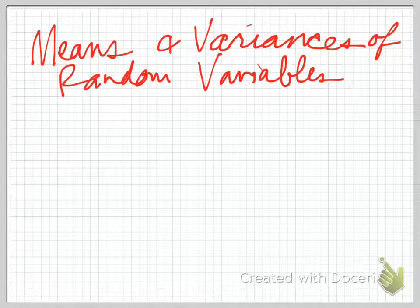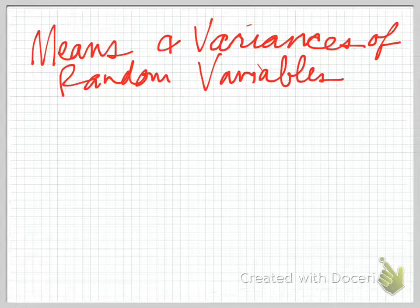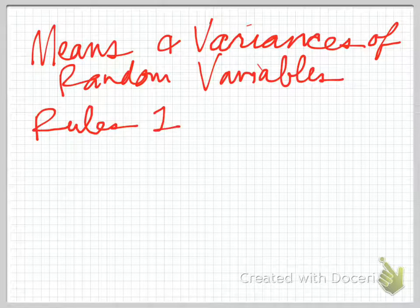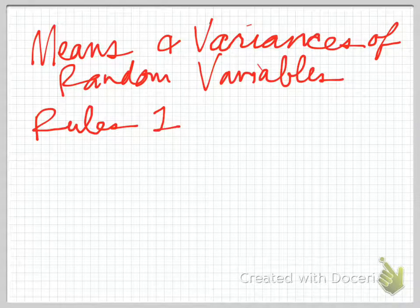This video is for AP Stats section 7.2. We're in Means and Variances of Random Variables and I'm doing problem 7.46 and we'll do 7.47 and we'll talk about how to do it out of our AP Stats book.